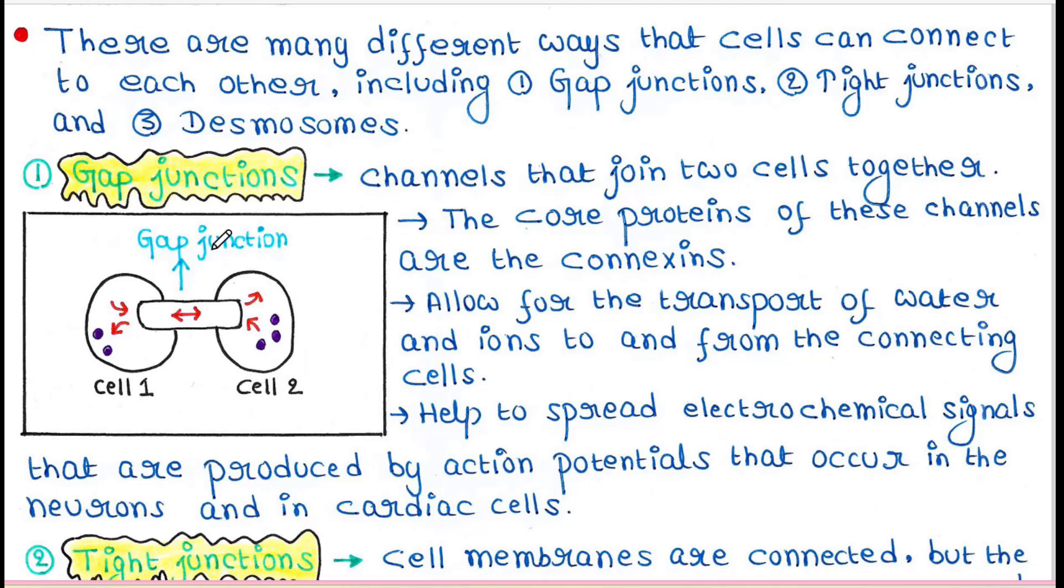First is gap junctions. Gap junctions are basically channels or tubes that join two cells together. The core proteins of these channels are the connexins.